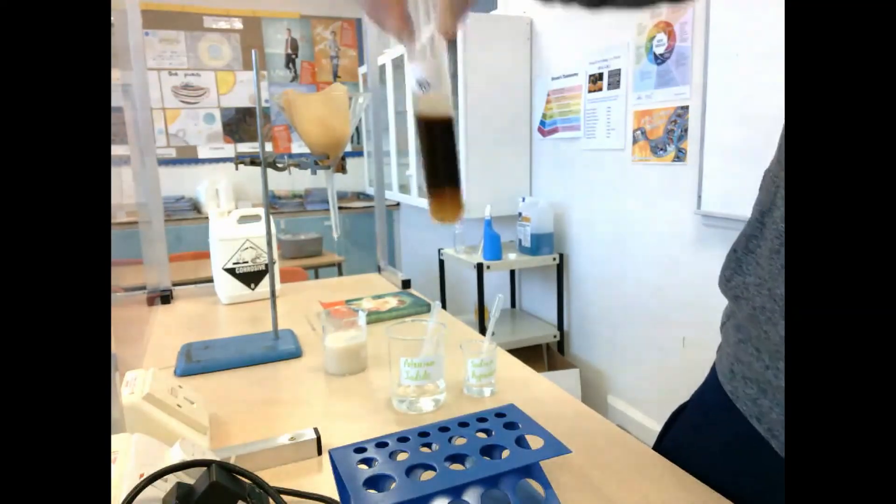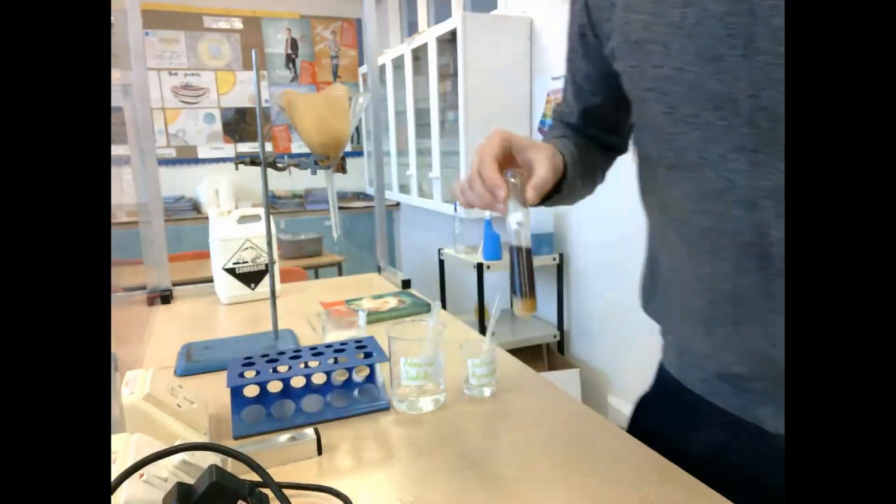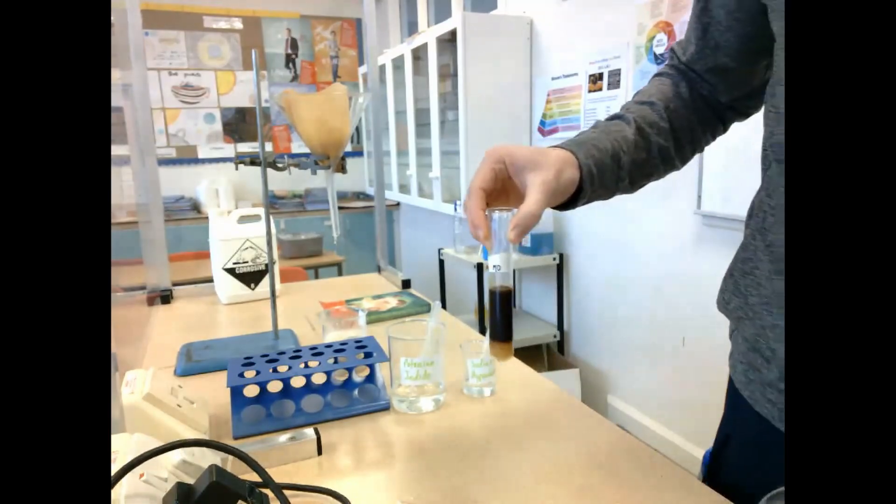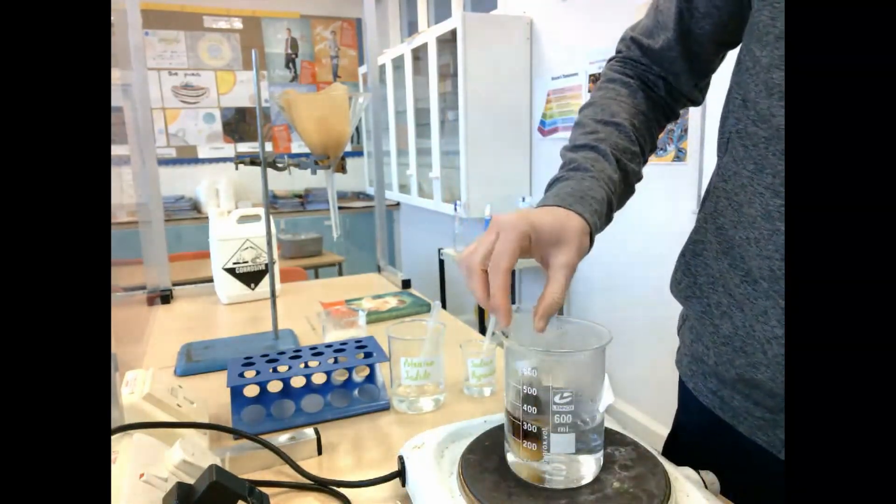So what we then do is we take that test tube and we're going to add it to a nice beaker over a hot plate and we're going to continue to add heat.